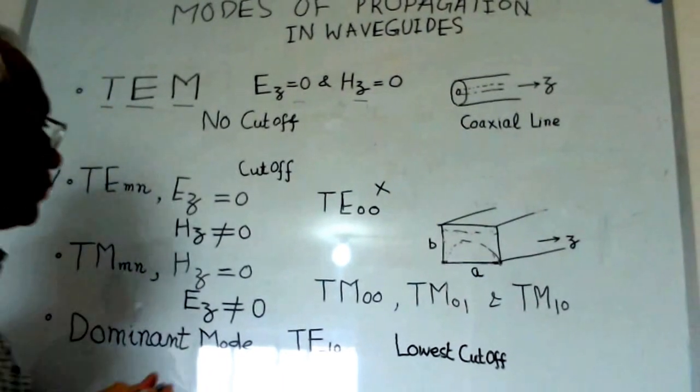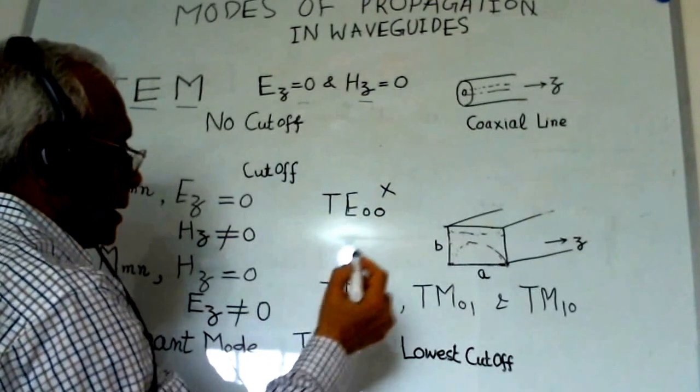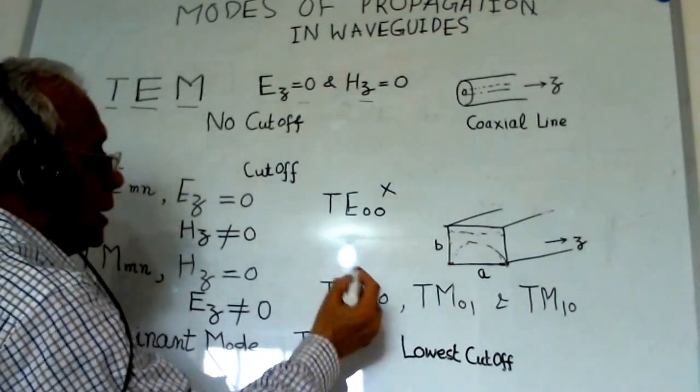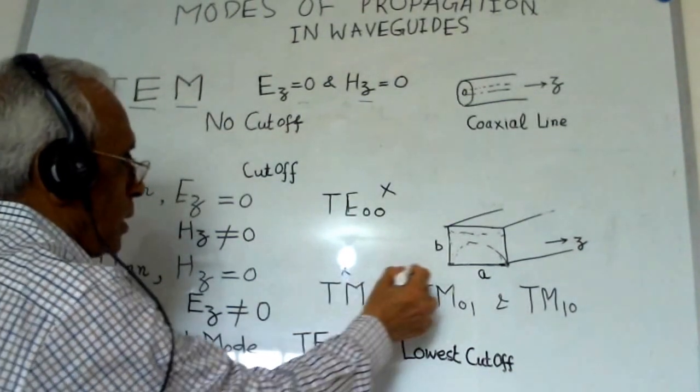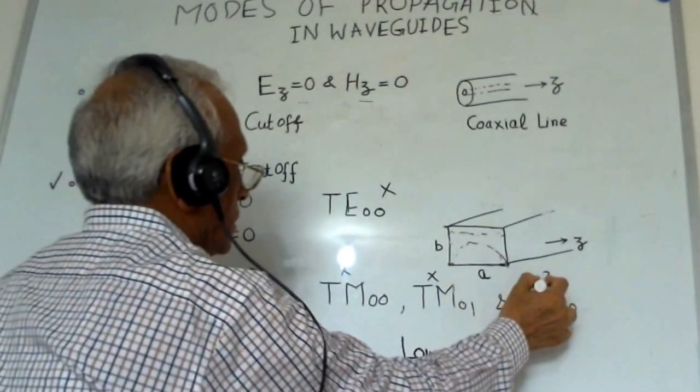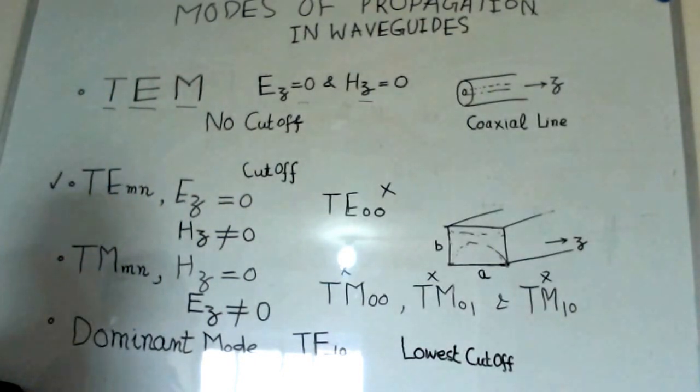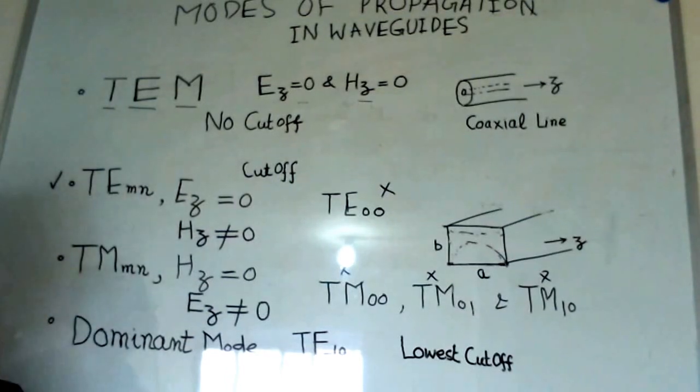Similarly, in TM modes, the modes having M and N zero and one do not exist. That means the first mode which exists is the mode TM11 in a rectangular waveguide.